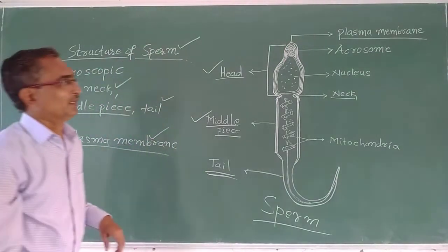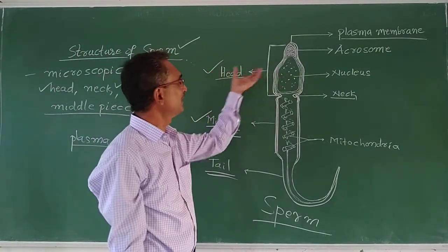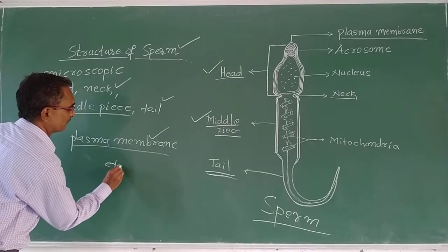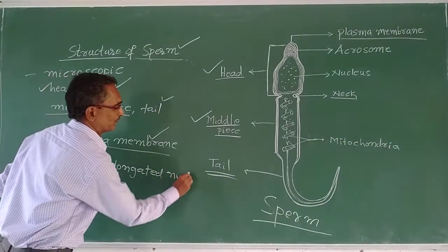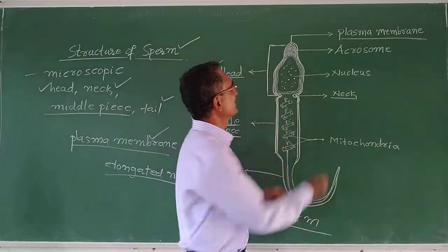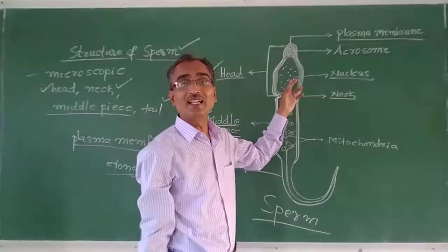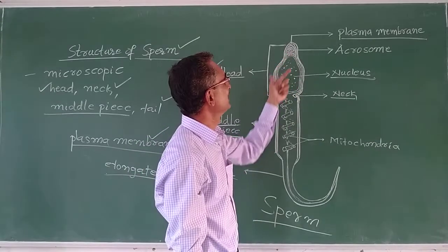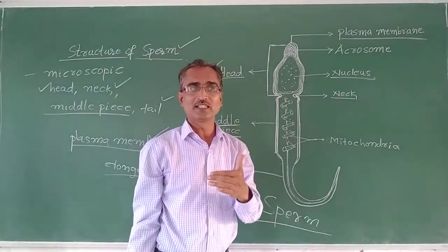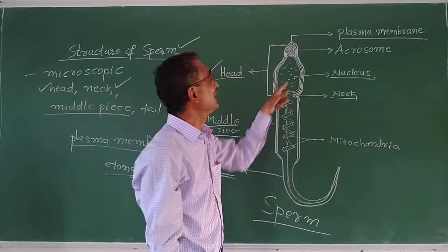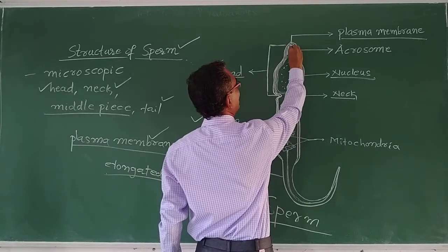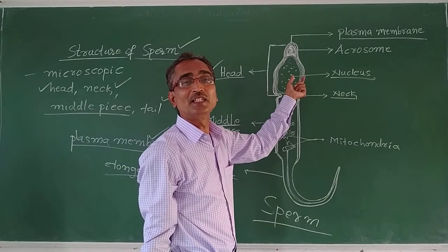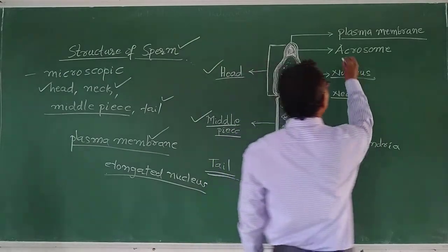The head contains an elongated nucleus. Anterior to this elongated nucleus, there is a cap-like structure — the shaded part you can see here. This cap-like structure, which is anterior to the elongated nucleus, is known as the acrosome.